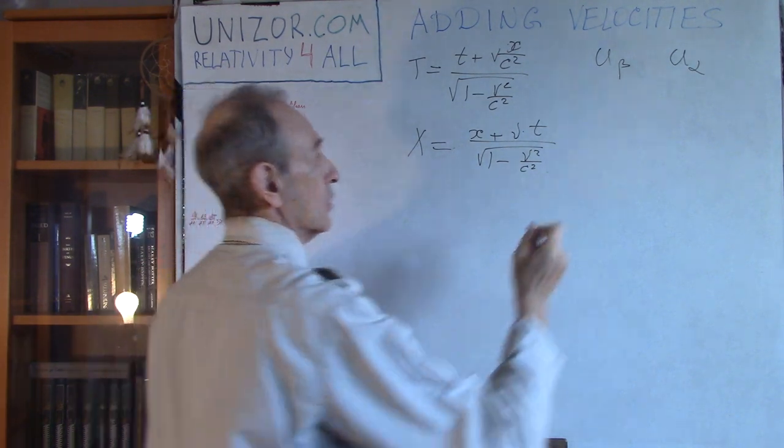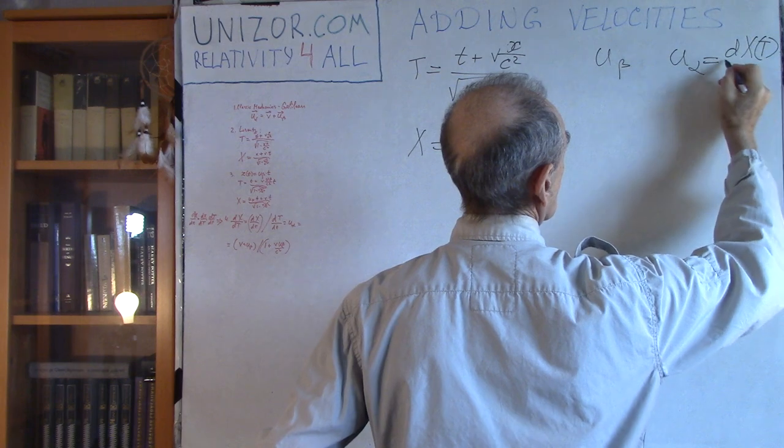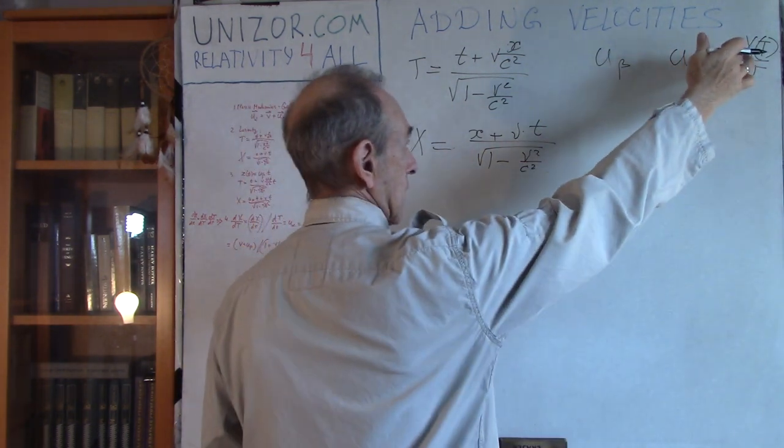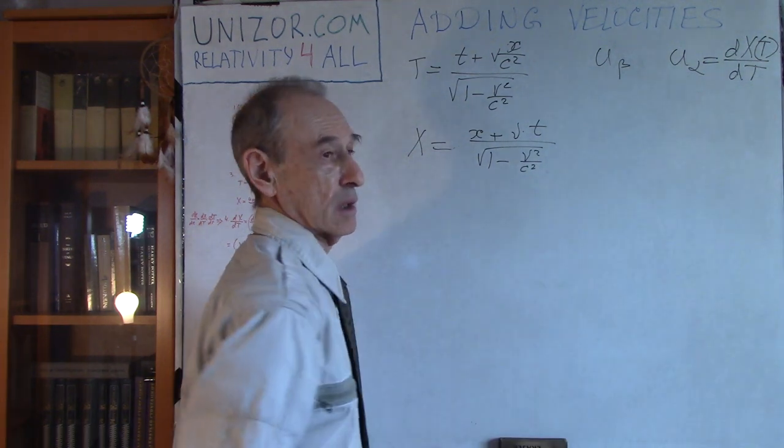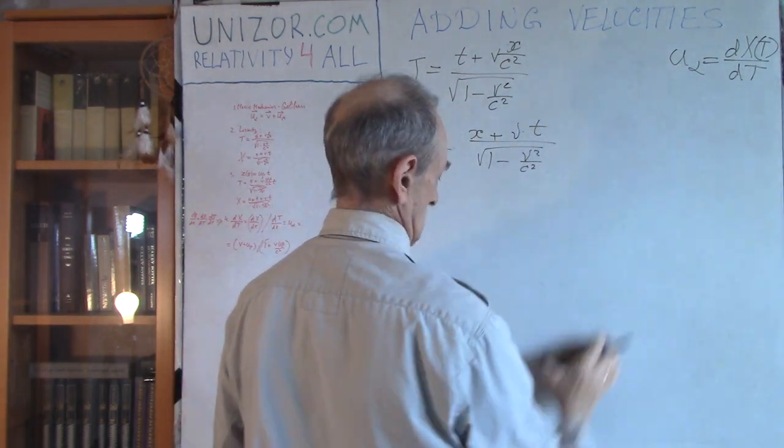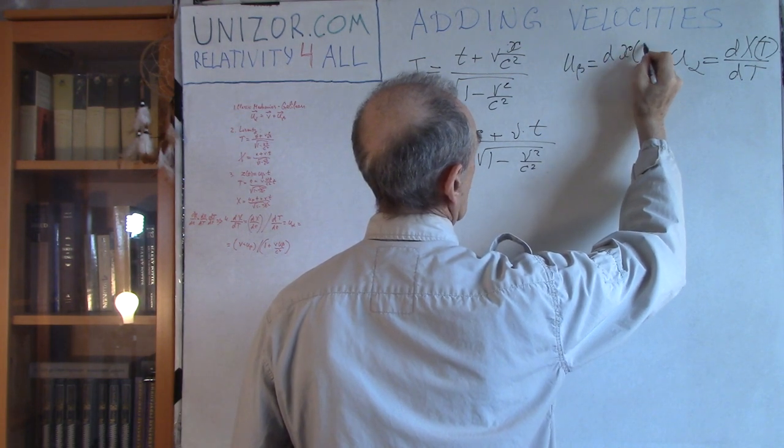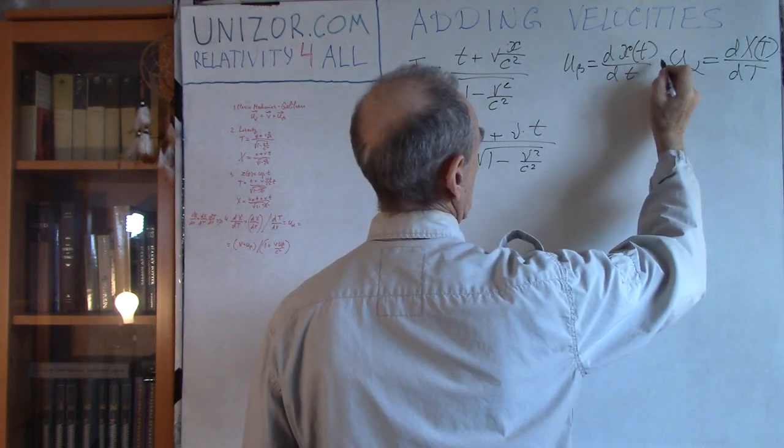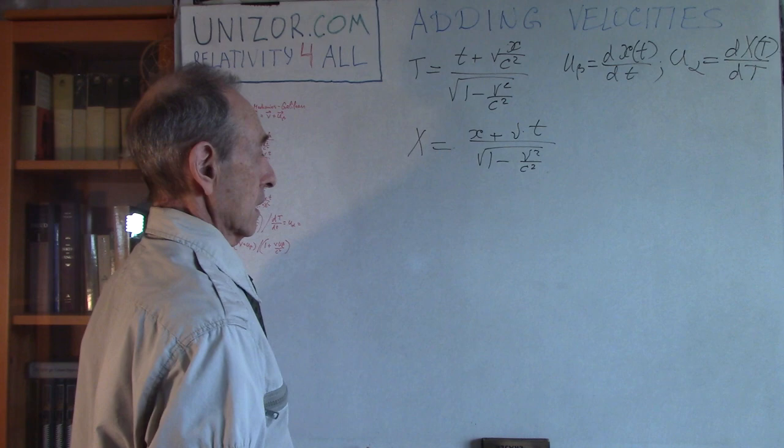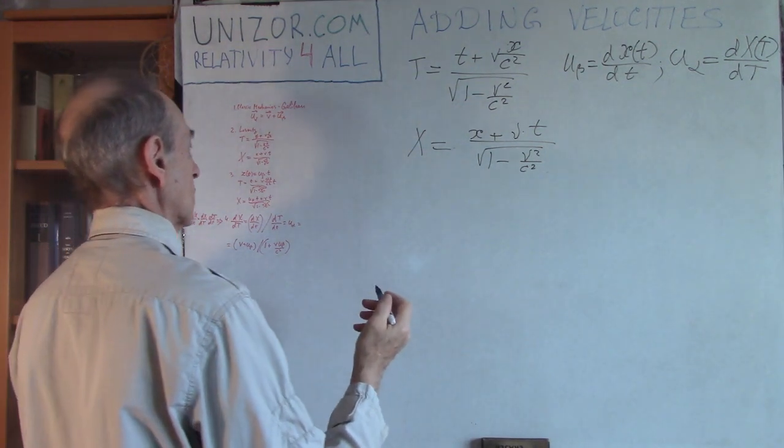I have defined everything we needed. Now what do we need? We need u_alpha, which is dX/dT. That's what we need. The speed of the object, that's the x-coordinate of the object relative to alpha system. That's why we differentiate by capital T. What is u_beta? u_beta is derivative of lowercase x of lowercase t by lowercase t. So this is what we have, this is what we have to get.